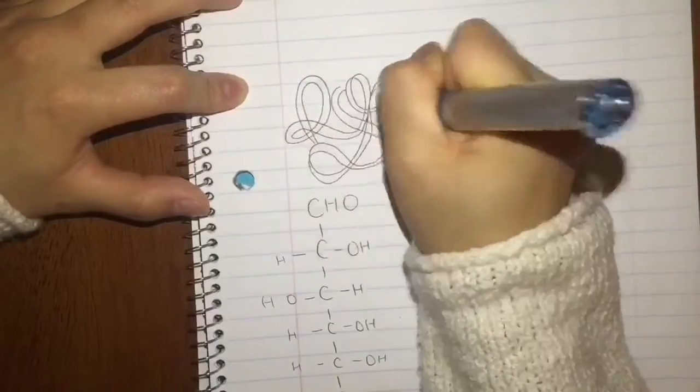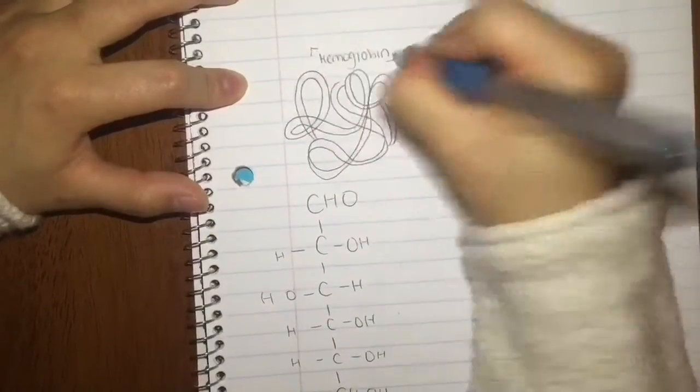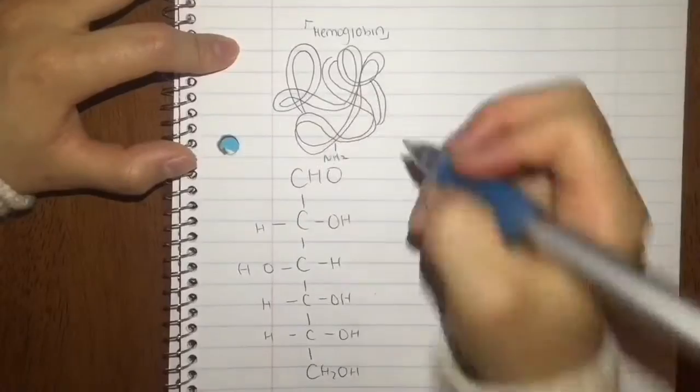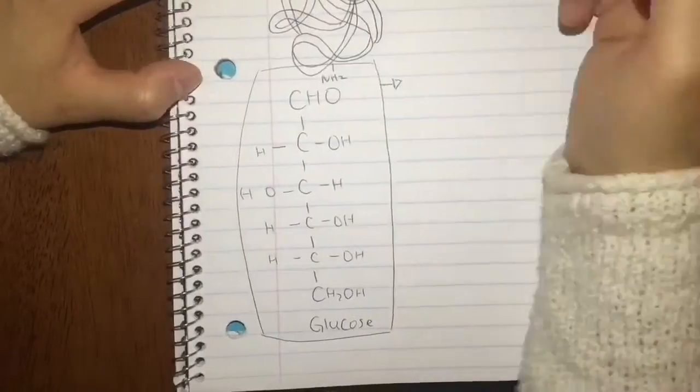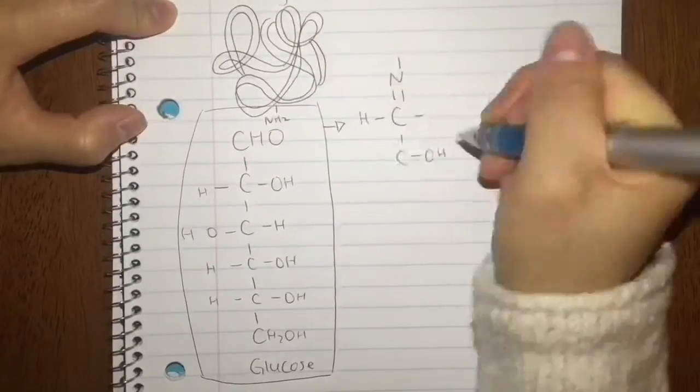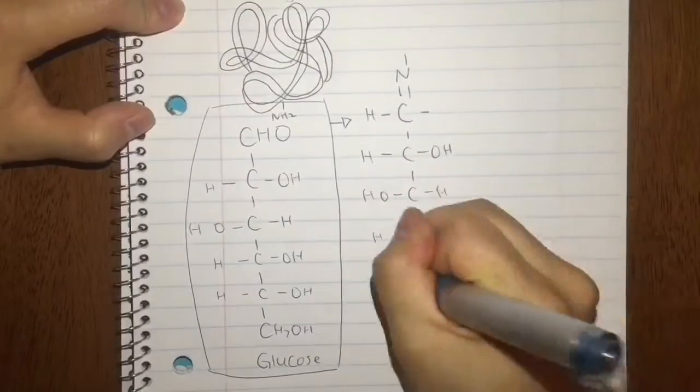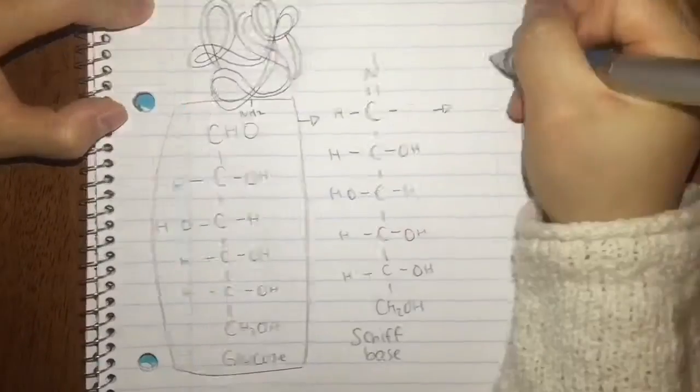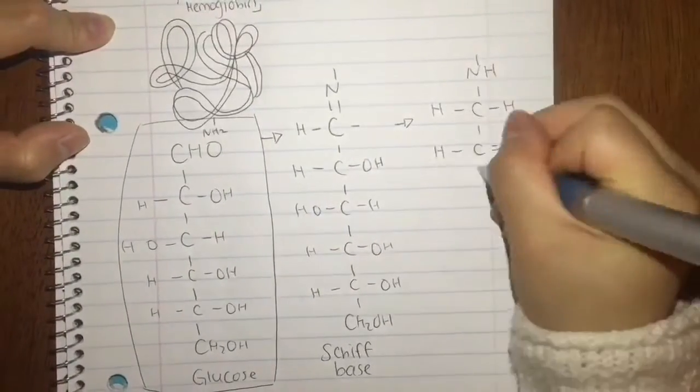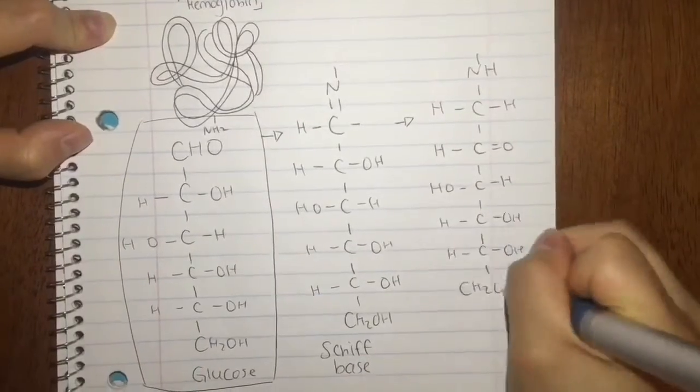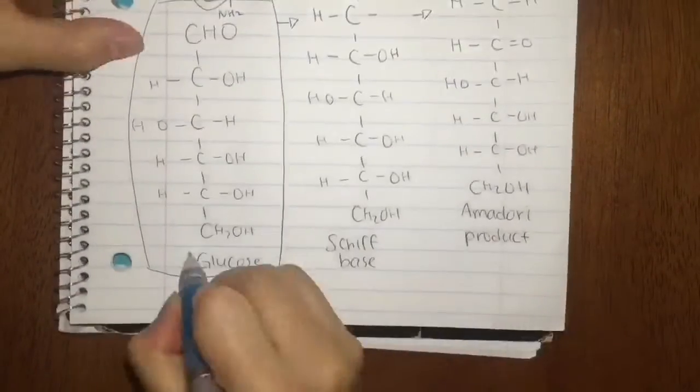Sugar binds to reactive amino groups, it changes in structure, it's called the Schiff base. Oops, the next change is really quite spontaneous, transforming into an Amadori product so miscellaneous. These glycated hemoglobin molecules indicate the amount of glucose in the blood pool.